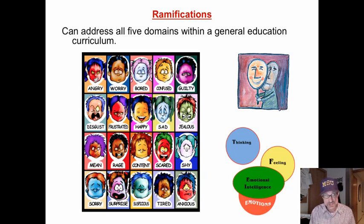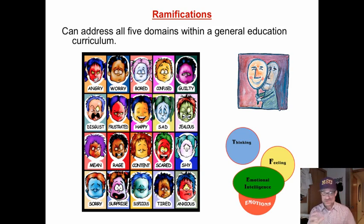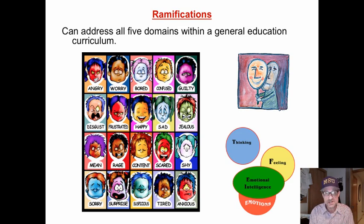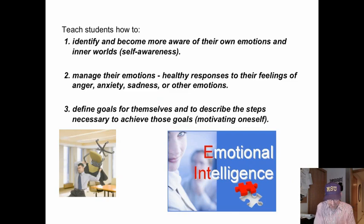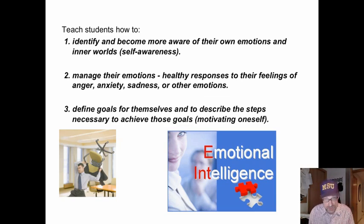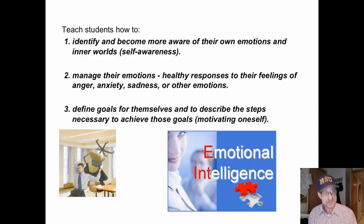Here are the ramifications. We can address all five domains within a general education curriculum, meaning we don't have to have a separate class in emotional intelligence. We can create an inner curriculum that fits like a hand within the glove of our general education curriculum. For instance, we can teach students self-awareness — how to identify their own emotions — through writing and reflective writing.